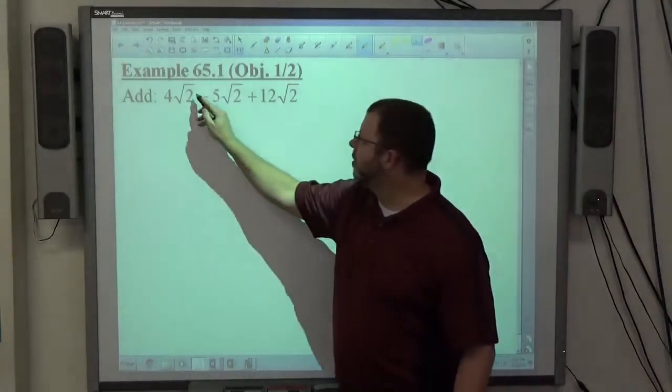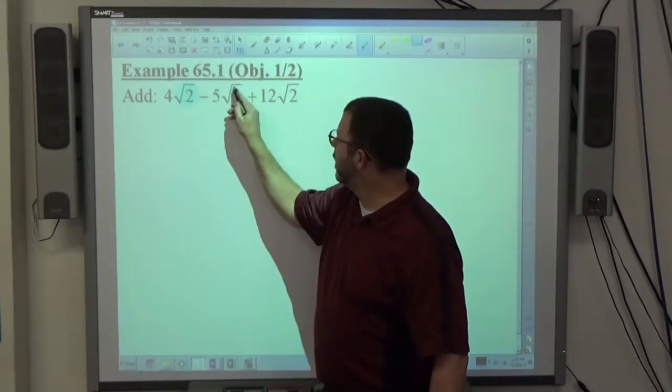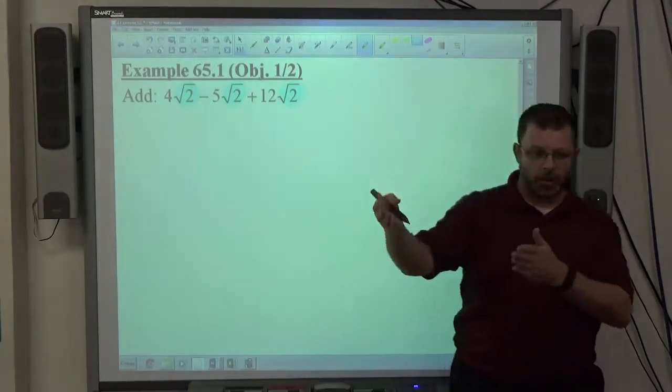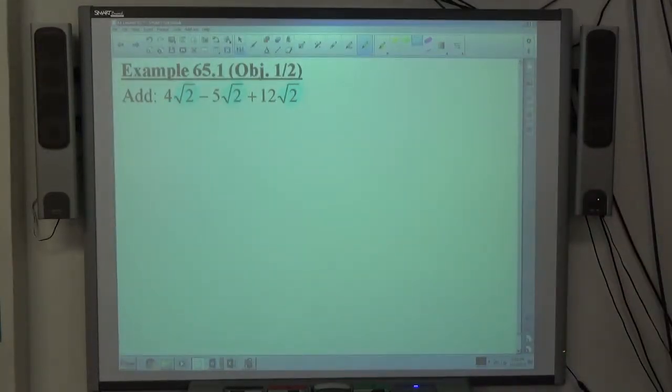In order to add radicals, the radical objects have to be the same radical object to be able to add just like all the x's had, all the terms had to have x, we could add the x terms together. All the terms had y, we could add the y's together.